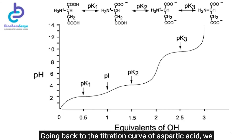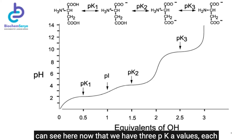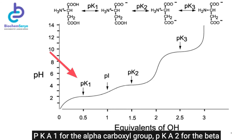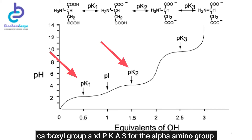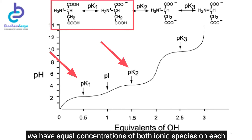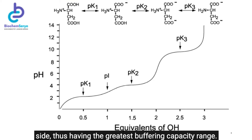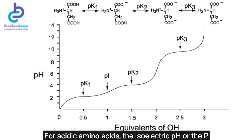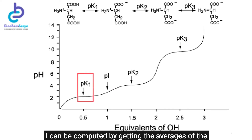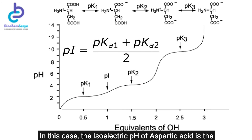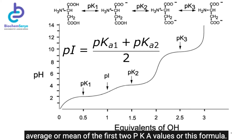Returning to the titration curve of aspartic acid, we can see three pKa values: pKa1 for the alpha-carboxyl group, pKa2 for the beta-carboxyl group, and pKa3 for the alpha-amino group. At each pKa, equal concentrations of both ionic species exist on each side, giving the greatest buffering capacity, manifested by the plateauing of the curve. For acidic amino acids, the isoelectric pH (pI) is computed by averaging the pKa values of the two most acidic functional groups — in this case, the average of pKa1 and pKa2.